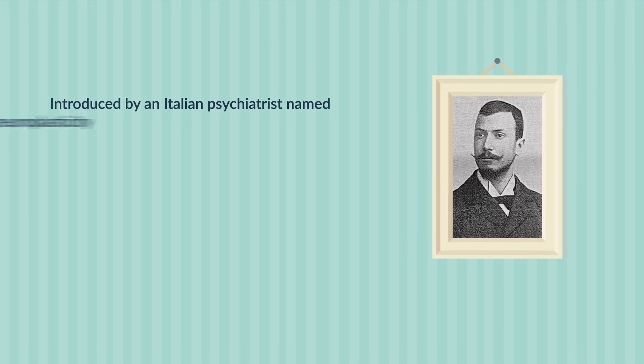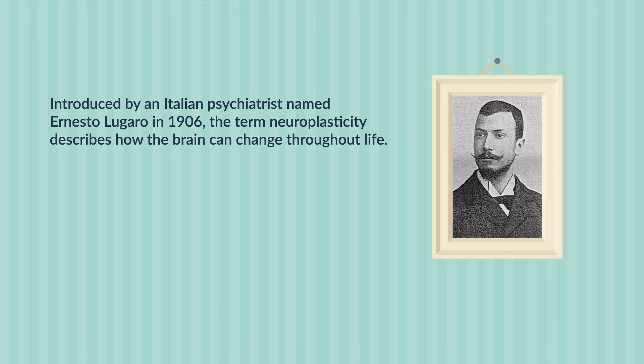Originally introduced by an Italian psychiatrist by the name of Ernesto Lugaro in 1906, the term neuroplasticity was a way to describe how the brain can change throughout life to adapt, learn, and even recover from brain injury.